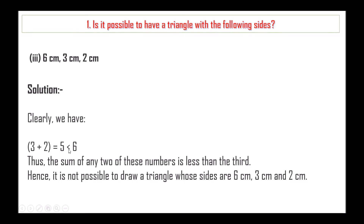Next: 6 cm, 3 cm and 2 cm. Here 3 plus 2 is 5, which is less than 6. Thus it is not possible to draw a triangle whose sides are 6 cm, 3 cm and 2 cm, because the sum of any two of these numbers is less than the third number. Hence it is not possible.